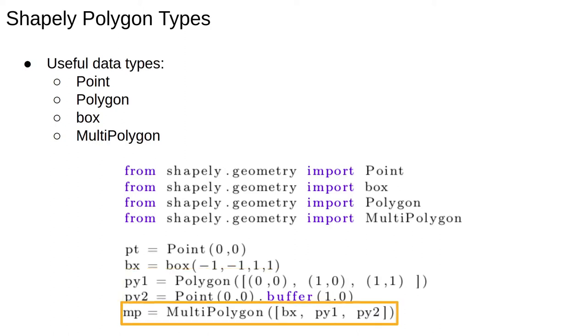mp is a multi-polygon containing both pY1 and pY2. A multi-polygon is exactly what it sounds like, a container for multiple polygons which may or may not overlap.